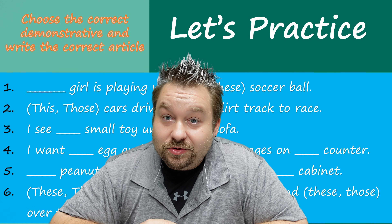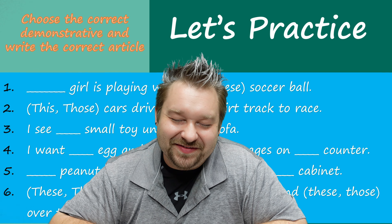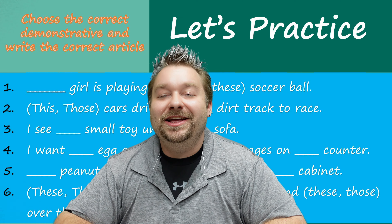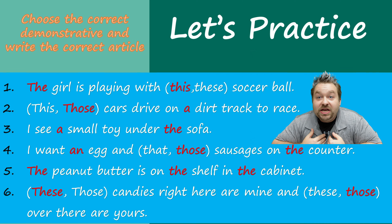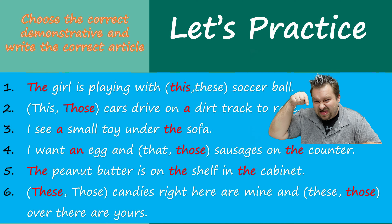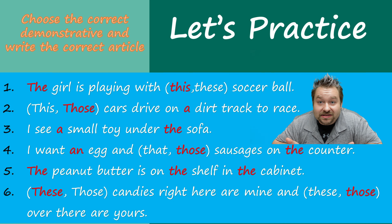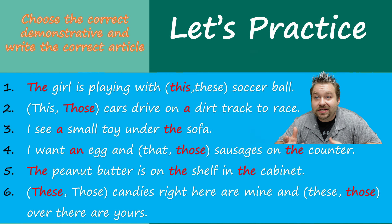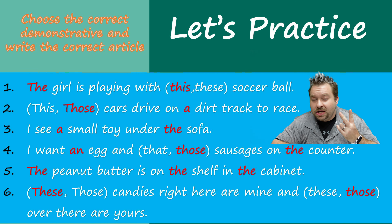Okay, let's check our answers. Number one: 'The girl is playing with this soccer ball.' Soccer ball is singular, so it can't be These - These is plural - so it had to be This. Sometimes we use process of elimination to find the answer.